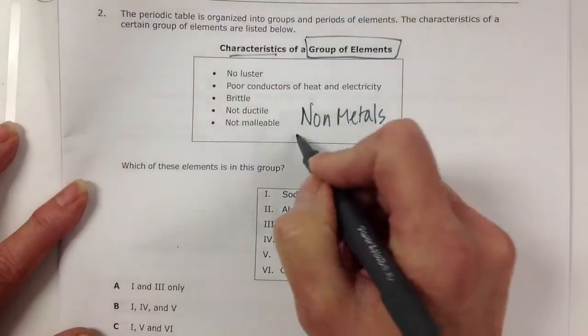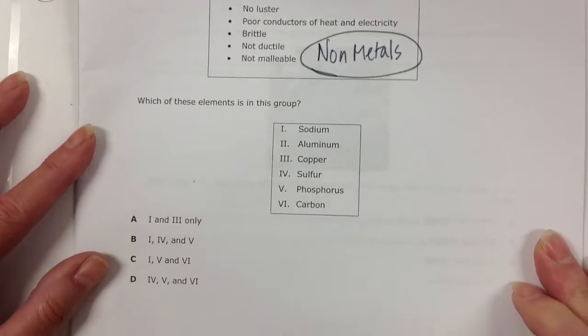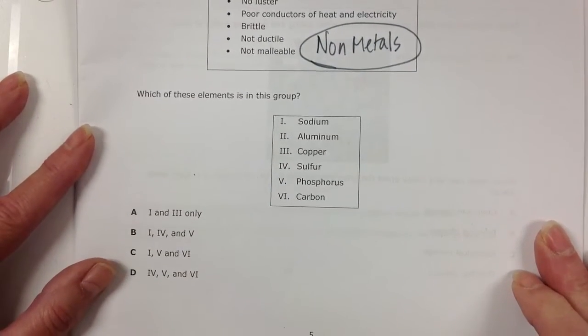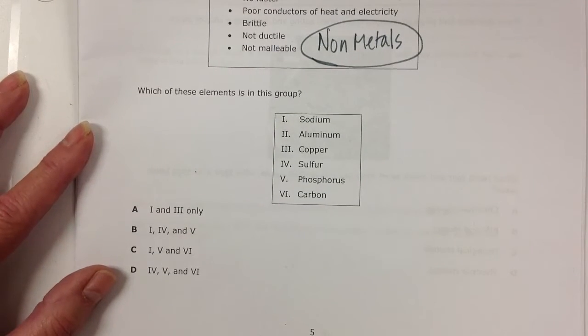Okay, so we know that we're looking for non-metals. So now we're asked to look at the elements in this group and find those non-metals. For that, we need our periodic table.